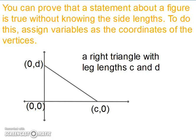You can prove that a statement about a figure is true without even knowing the side lengths. To do this, assign variables as the coordinates of the vertices. So instead of assigning a numerical value, you'll now have variables. You'll always know that your origin is 0, 0. And as you're going up your y-axis, your x will be 0. And as you're going across your x-axis, your y will be 0. So you will have some values in there.